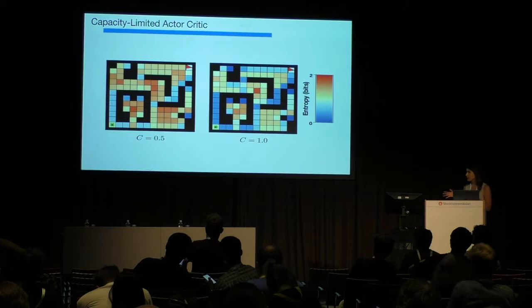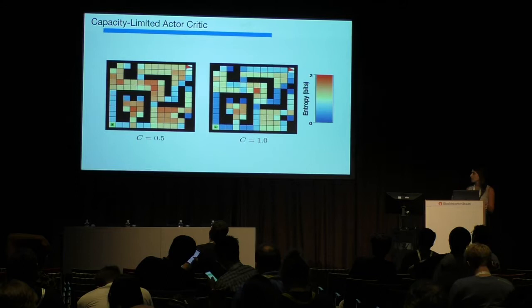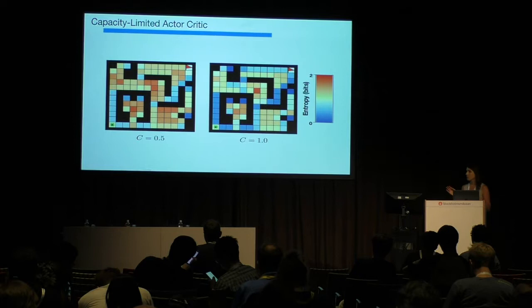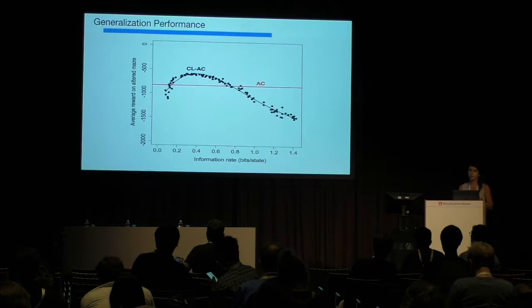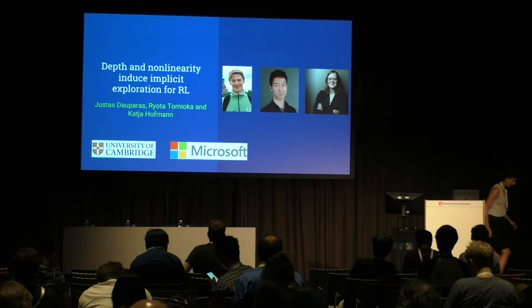We applied this in a 2D grid world where the task is to navigate from a start to a goal position. Capacity constraints force behavior to become more deterministic along critical paths (shown in blue) and allow exploration to emerge in states where errors are less costly (shown in orange). We also show that this limited algorithm outperforms its unlimited counterpart in generalization tasks. Please stop by our poster for more details.